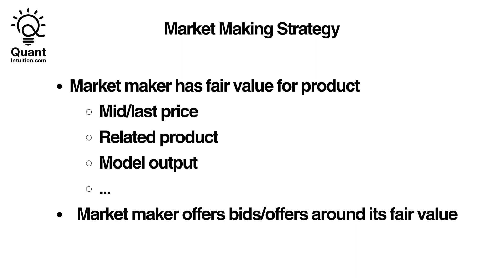Once a market-maker has a sensible fair for a product, they make markets around this fair, which basically means they offer bids below this and offers above it on a relatively constant basis. If everything works out well, the market-maker then earns a small profit through the spread at a high frequency and thereby ends up with a profit overall.